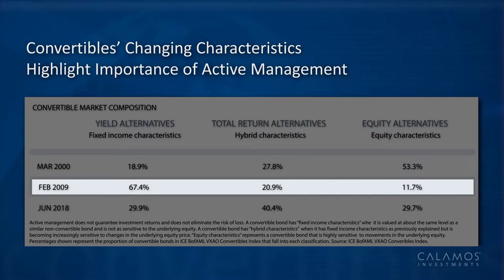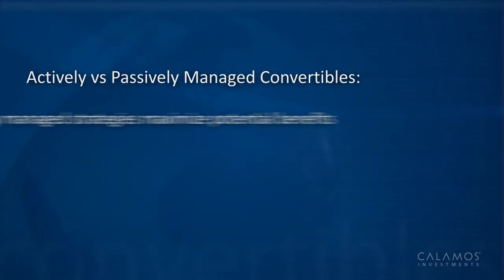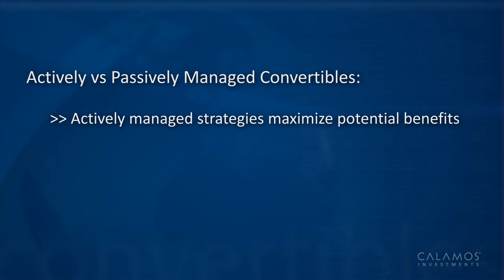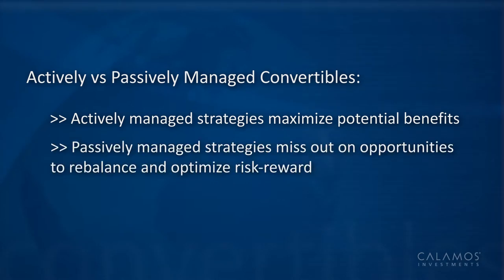Conversely, in 2009, after the financial crisis, the convertible market looked a lot like the bond market. An investor who owned a portfolio that looked like the market at that point in time would have missed out on a lot of the recovery in the equity market in the ensuing months. This shows why convertibles must be actively managed to achieve their goals. A passive strategy that just follows where the market goes misses out on the opportunity to rebalance and optimize risk-reward.